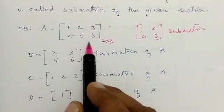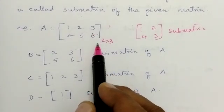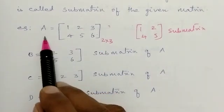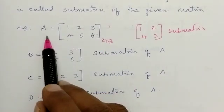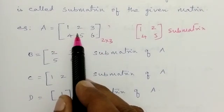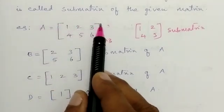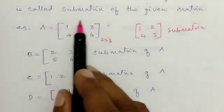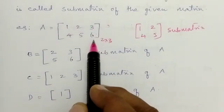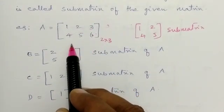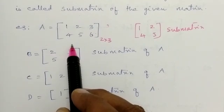Zero columns removed means no column is removed, and the matrix left is exactly as it is. Hence, every matrix is a submatrix of itself.